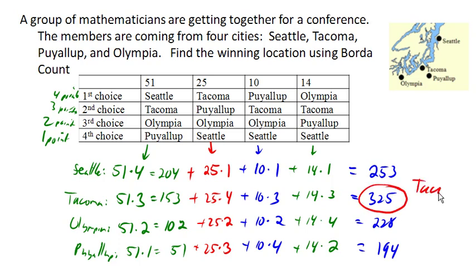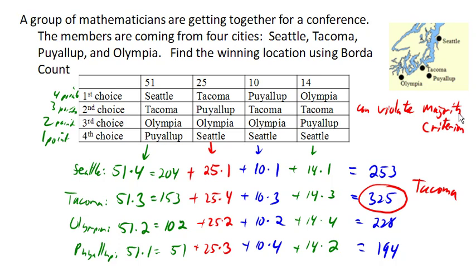You should immediately notice an issue: the choice that had the majority of first place votes didn't win. This method can — not always, but it can — violate what's called the majority criterion. The majority criterion says if a choice has more than 50% of the first choice votes, it seems fair that they should win. In this case, that didn't happen. What's really happening with Borda Count is that it tends to favor a good compromise option. Even though the 51 people from Seattle really want it to be in Seattle, Tacoma is a better compromise since no one else really wants to go to Seattle except for those people.